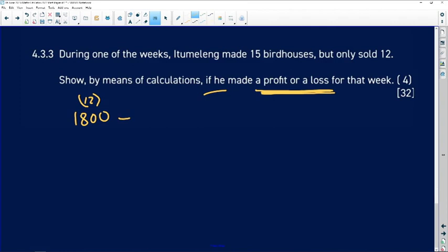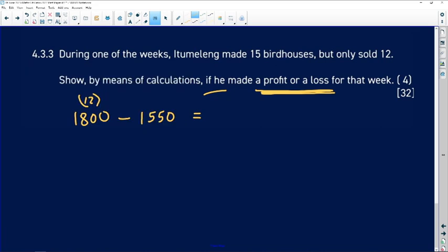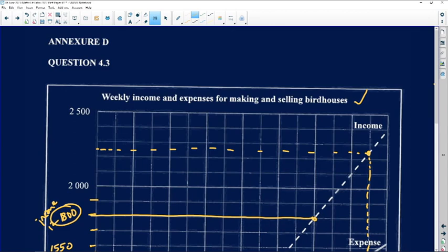So 1800 for 12 birdhouses minus how much they spent for 15 birdhouses which is 1550. Let's go see - yeah, they made a profit. It's not the greatest, but they still made a profit. 250 rand profit. Therefore a profit was made. It wasn't a lot, but it was made. So we've got that question.